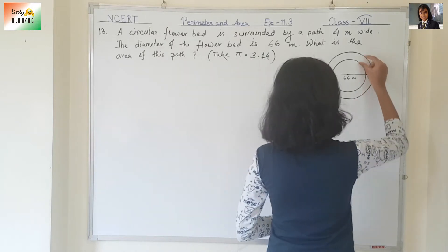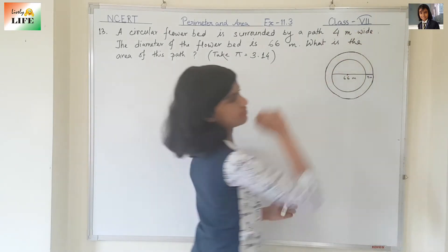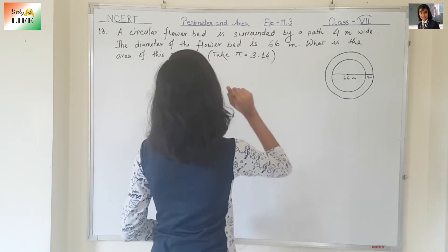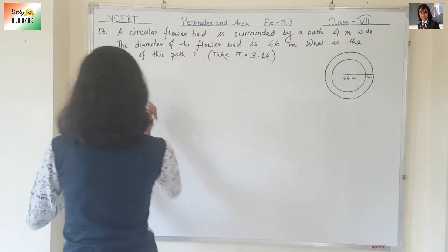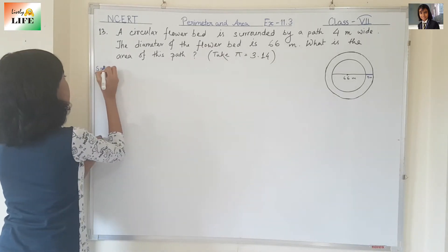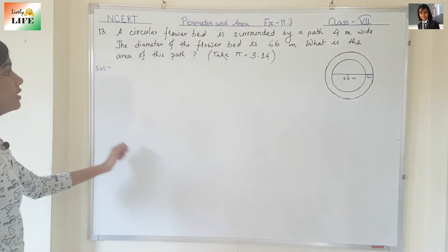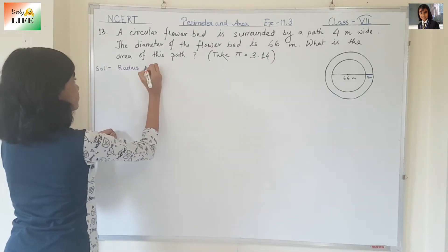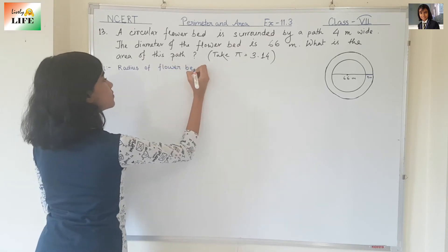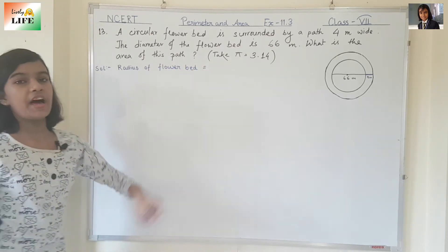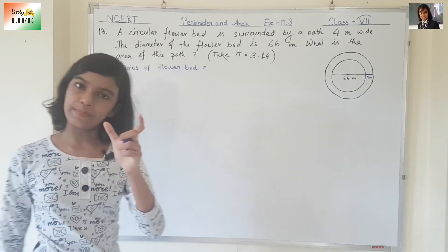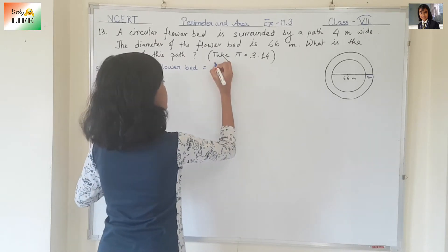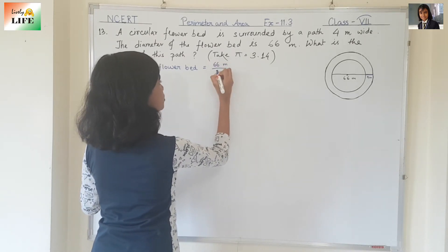We need to find out the area of this path. For this, first let's find out the area of the flower bed. Diameter is given 66 meter. Radius of flower bed — radius means diameter by 2. So diameter is given 66 meter, we need to find out the radius.